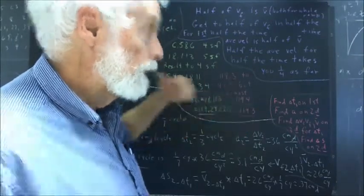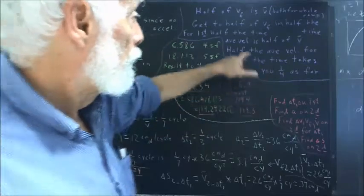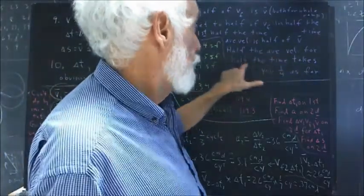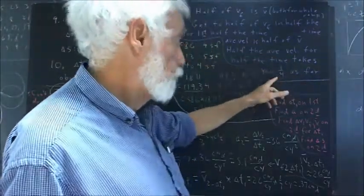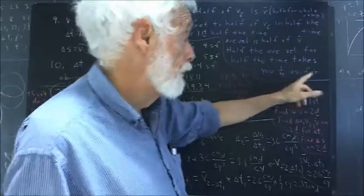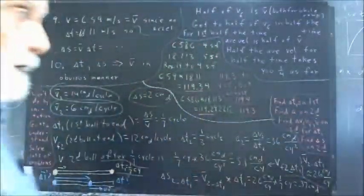Our average velocity is going to be half, the time interval is going to be half. Half the average velocity for half the time takes you how far? Half of a half, one-fourth as far.